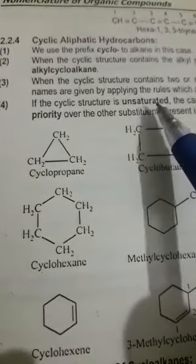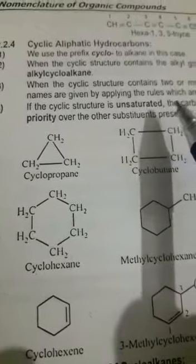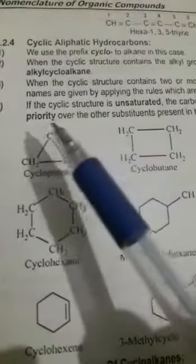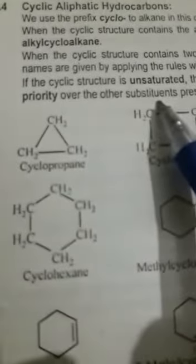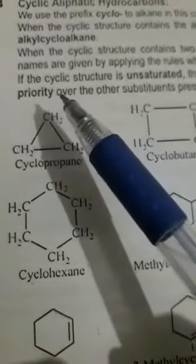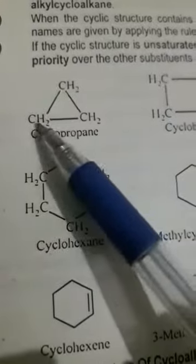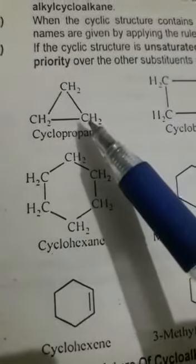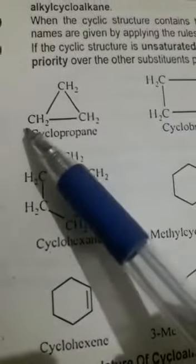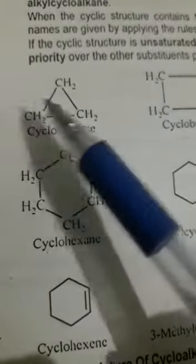Rule number four: if the cyclic structure is unsaturated، مطلب اس میں double bond یا triple bond بھی present ہے، then the carbon atom bearing the double bond gets the priority over the substituents۔ تو پھر ہم نے numbering اس carbon سے start کرنی ہے جہاں پر double bond present ہے، instead of substituent۔